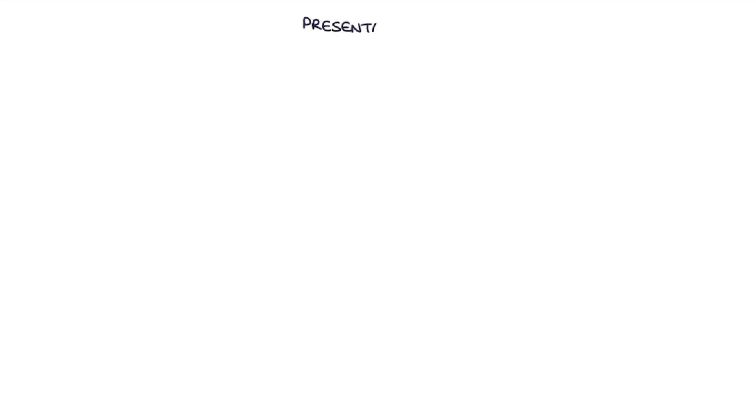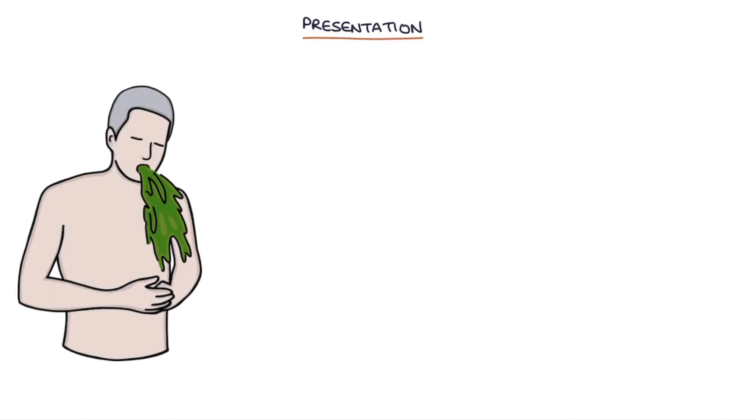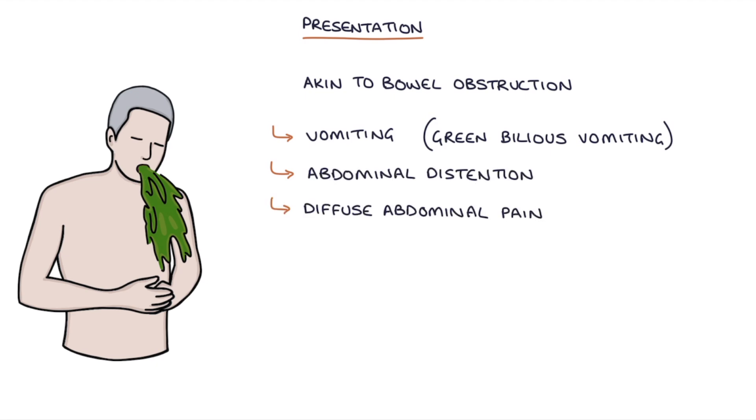So what's the presentation? The signs and symptoms of a volvulus are akin to bowel obstruction with vomiting, particularly green bilious vomiting, abdominal distension, diffuse abdominal pain and absolute constipation and a lack of flatulence.